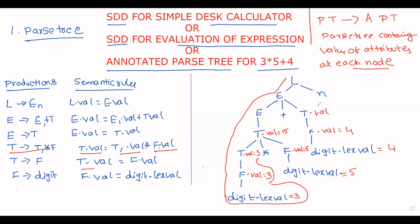T.val equals F.val, so T.val equals 4. Now for E: E tends to T, so E.val equals T.val, which is 4. Then E tends to E plus T, so E.val equals E.val plus T.val equals 15 plus 4 equals 19. Finally, L.val equals E.val equals 19.